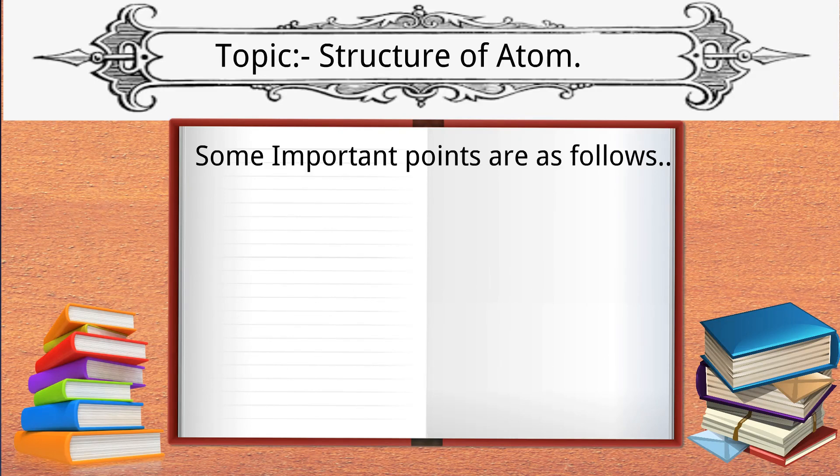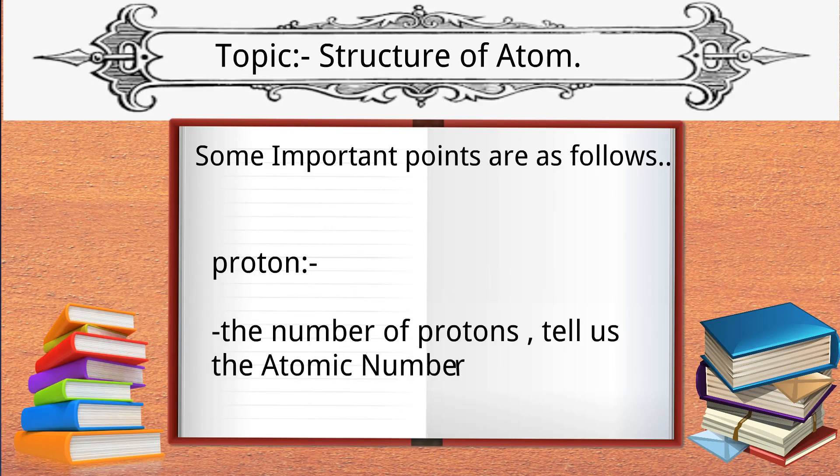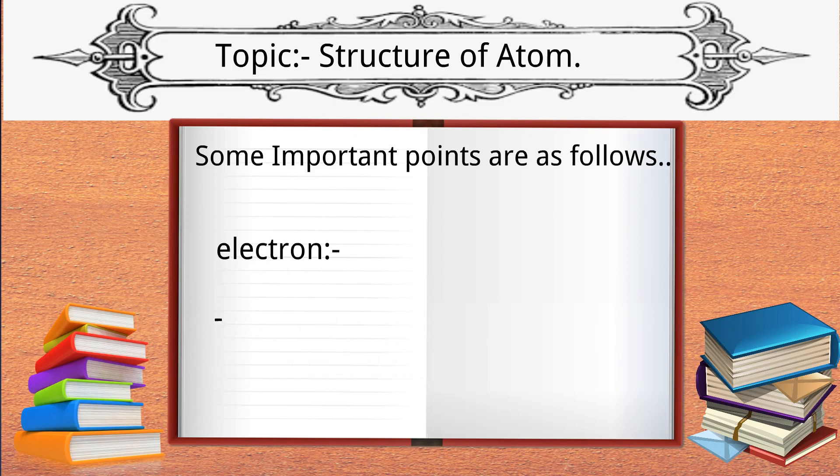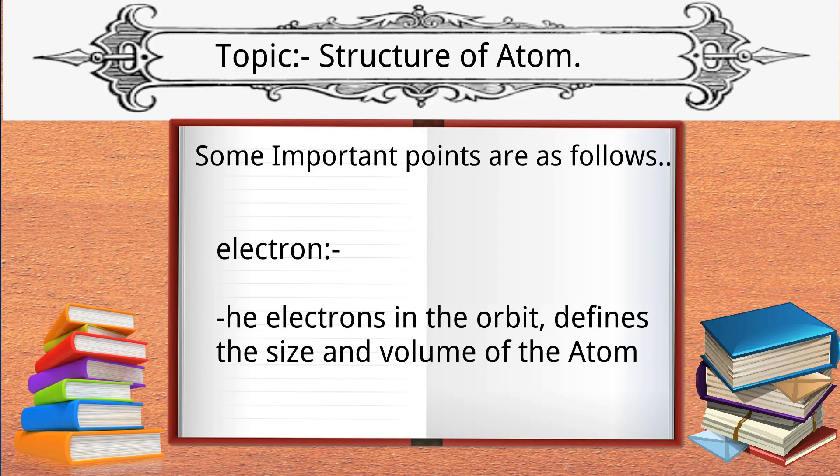Now let's see functions of each particle. First, let's see protons. The number of protons tells us the atomic number, and atomic number helps us to find many other properties of that element. So basically, number of protons determine the type of atom. Now let's see about electrons. The electrons in the orbit define the size and volume of the atom. Talking about neutrons, they simply add weight to the nucleus.